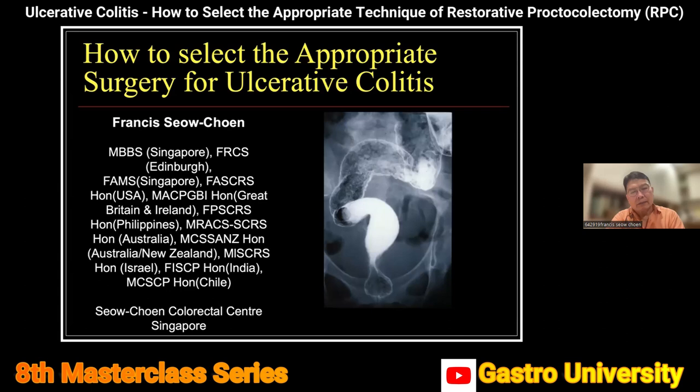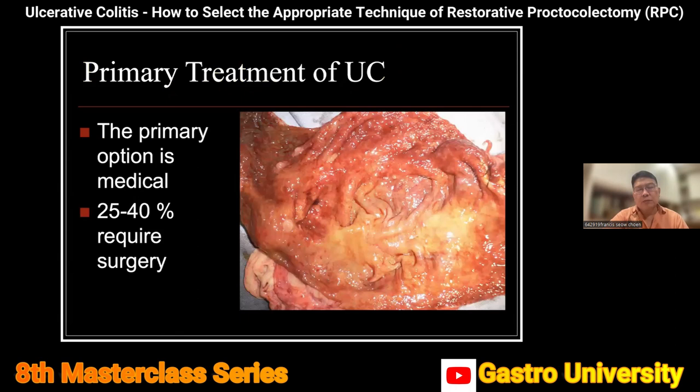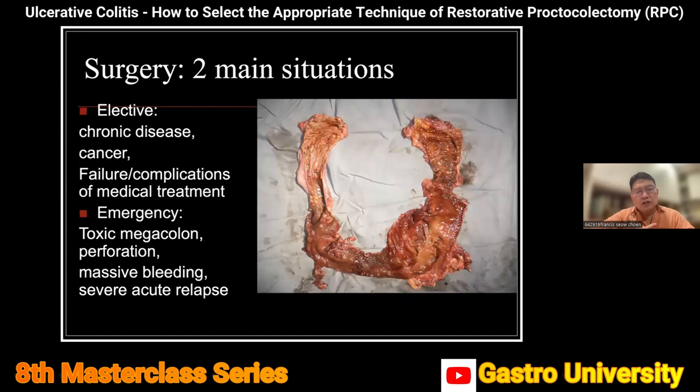We all know the primary treatment of ulcerative colitis must be medical, and there are many medical therapies discussed yesterday. But in spite of those advances, a quarter to up to 40% of patients will at some time in their life require surgery. When we talk about surgery for ulcerative colitis, there are two main situations: one is elective, and the other is the emergency situation.